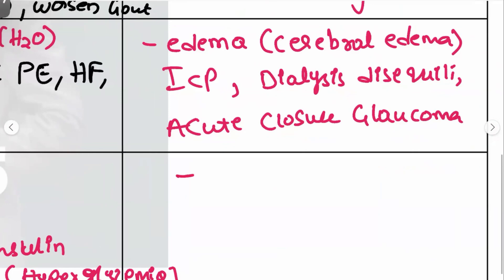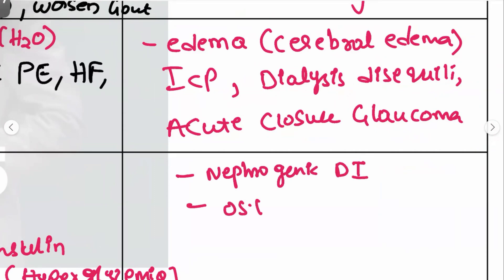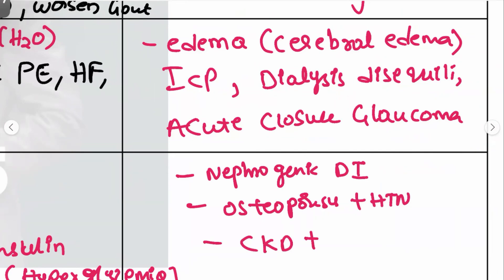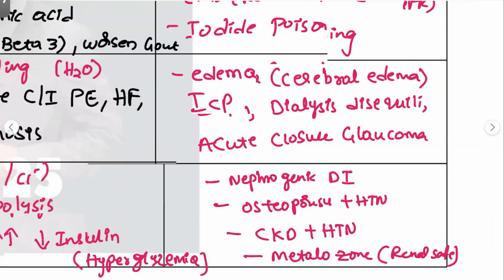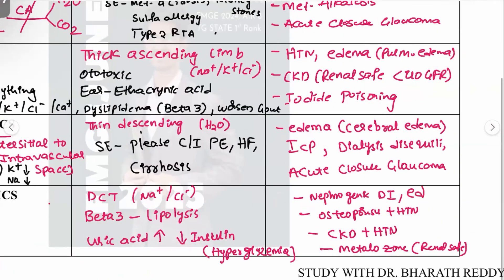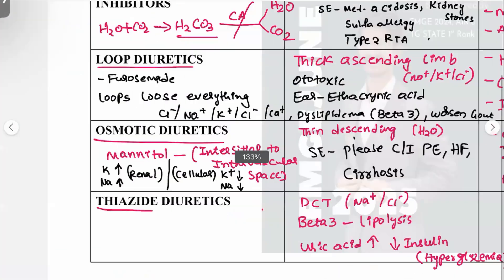Thiazide diuretics are indicated in nephrogenic diabetes insipidus, osteoporosis, hypertension, and CKD with hypertension. The renal-safe drug among thiazides is metolazone — remember this for exam purposes. Thiazides can also be used for edema. The main example is hydrochlorothiazide.